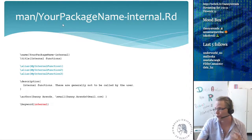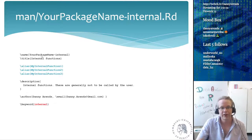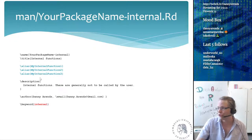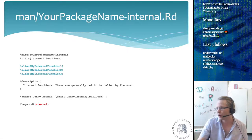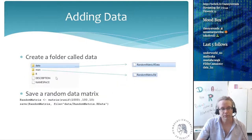For internal functions — functions used only within the package and not intended for users — create a file 'man/your_package_name-internal.Rd'. List all internal functions as aliases pointing to this single file. The description is typically 'Internal functions — generally not called by the user.' Specify the author and use 'keyword: internal'. This way all internal functions share one documentation file.